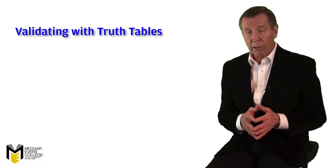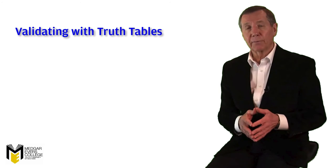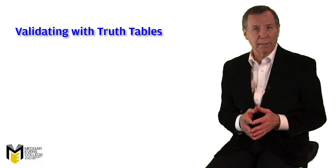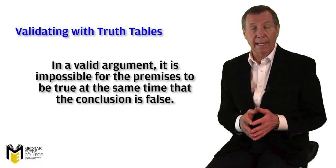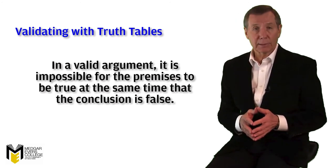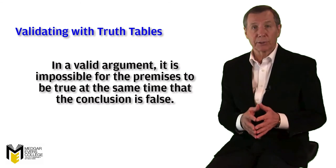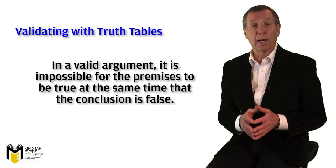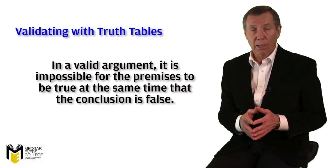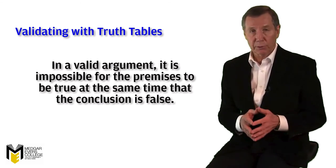And if you'll remember our definition of deductive validity — that in a valid argument it's impossible for the premises to be true at the same time that the conclusion is false — you'll see why validation is a result of not finding a row where the premises are all true and the conclusion false.